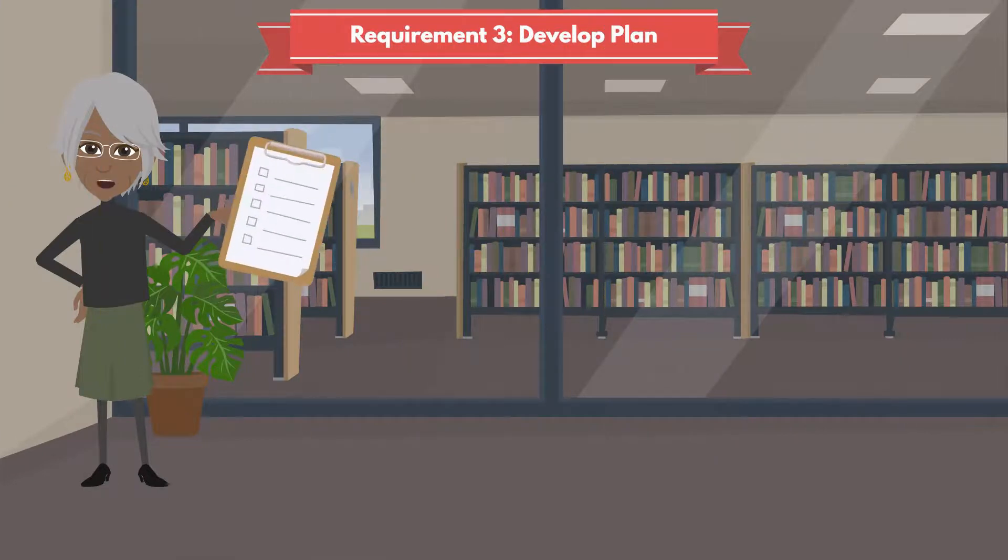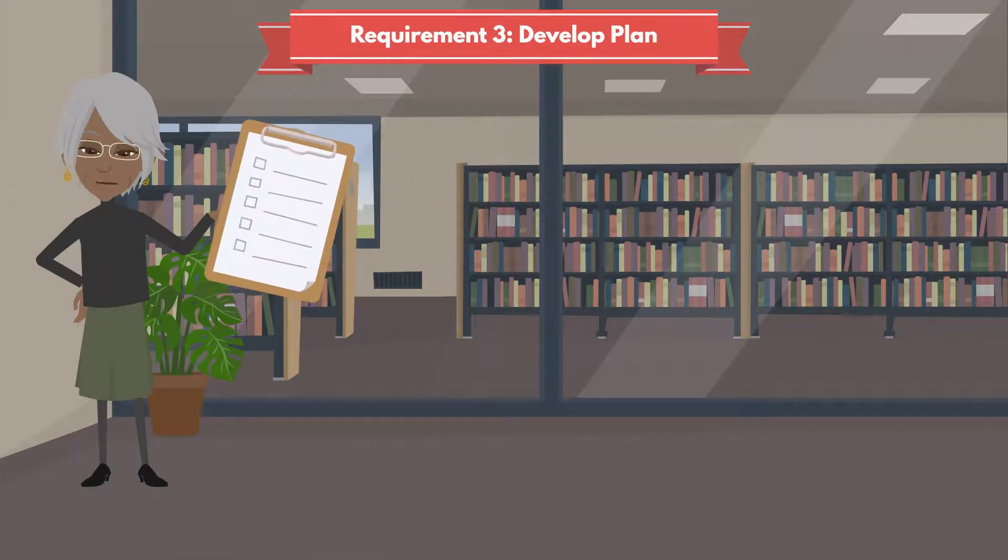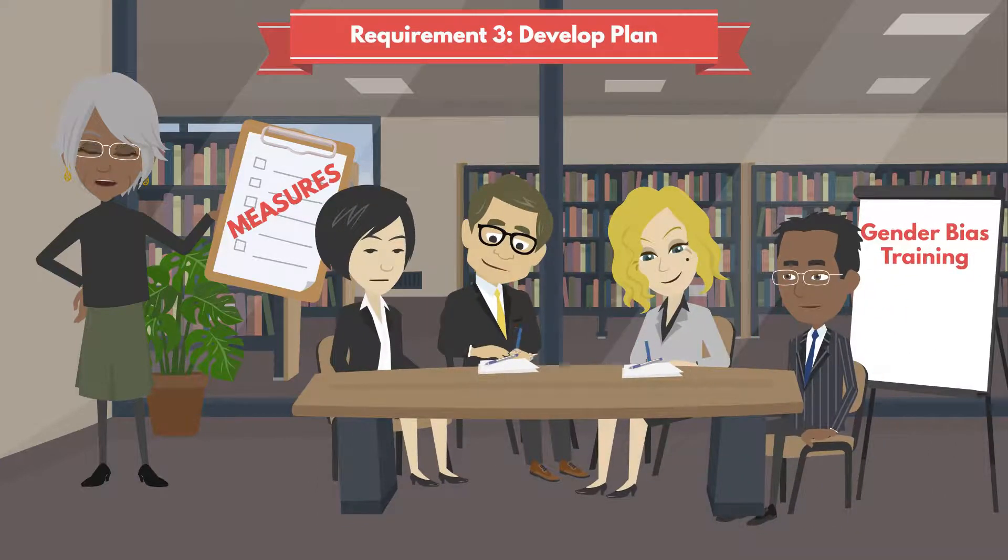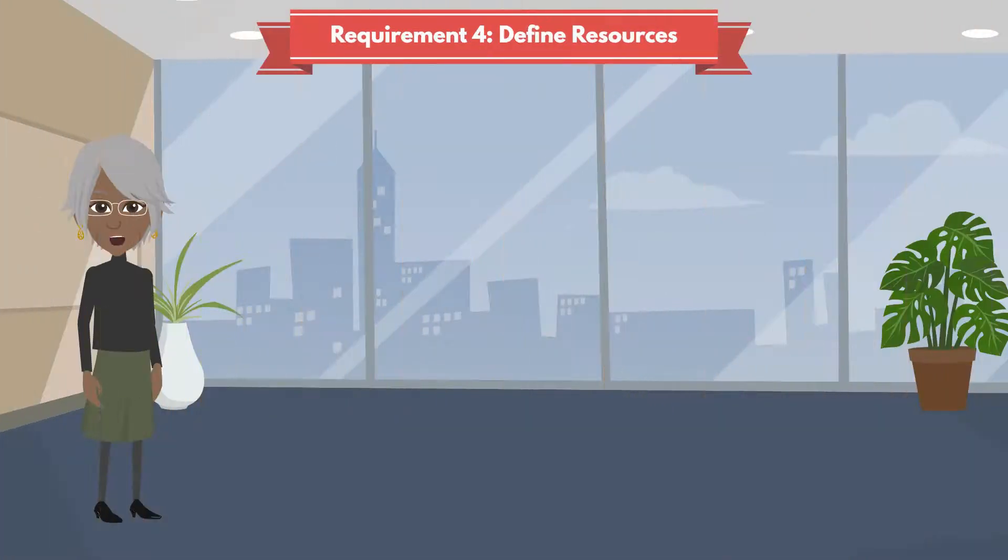You develop a gender equality plan, including concrete gender equality measures aimed at achieving the set objectives at your technical university. Gender equality measures could include a mentoring program for female early career researchers, or a gender bias training for members of a recruitment committee.